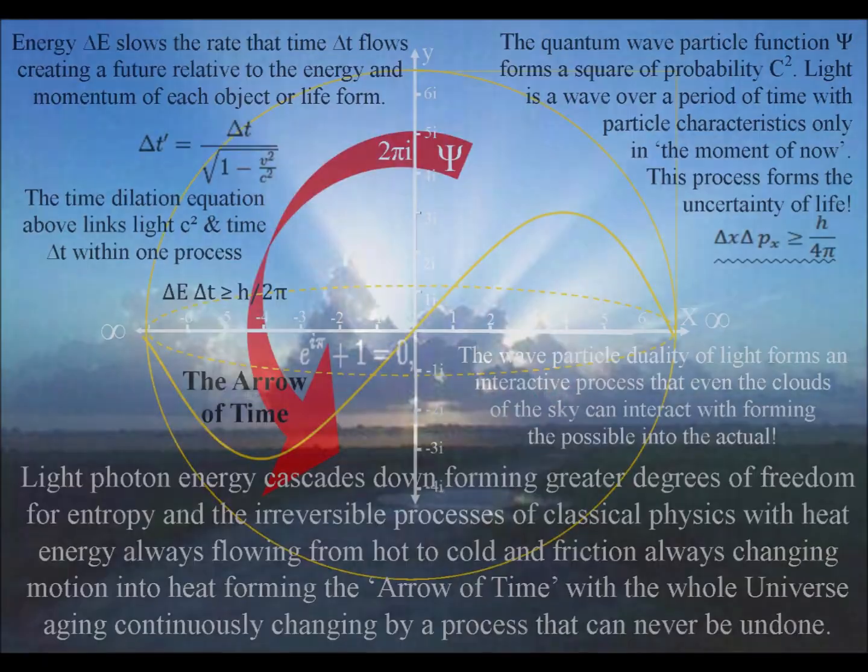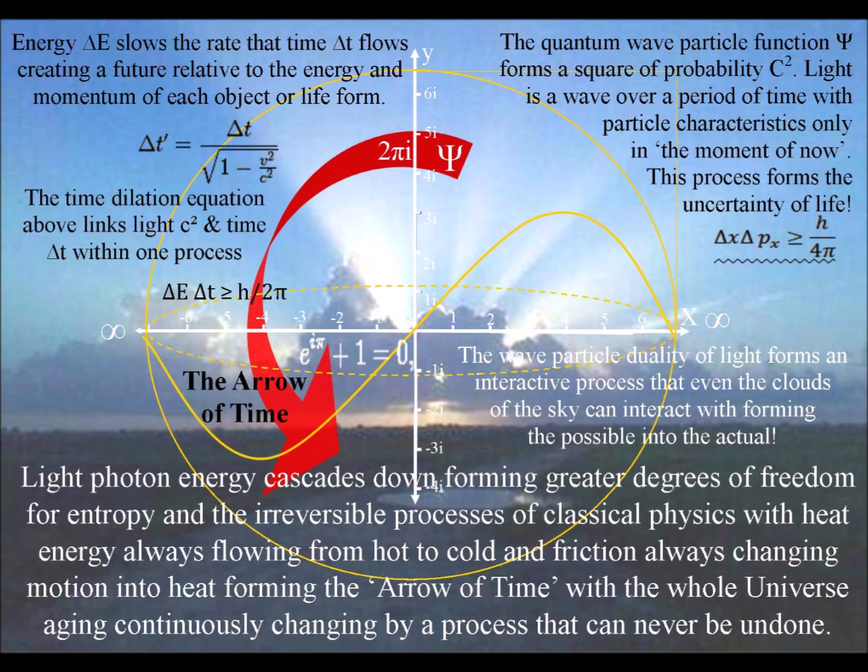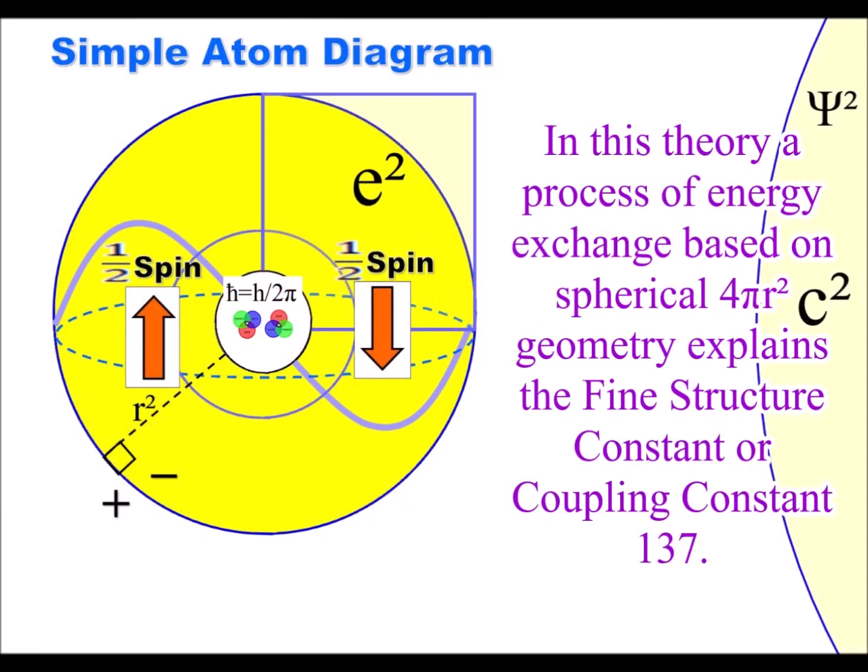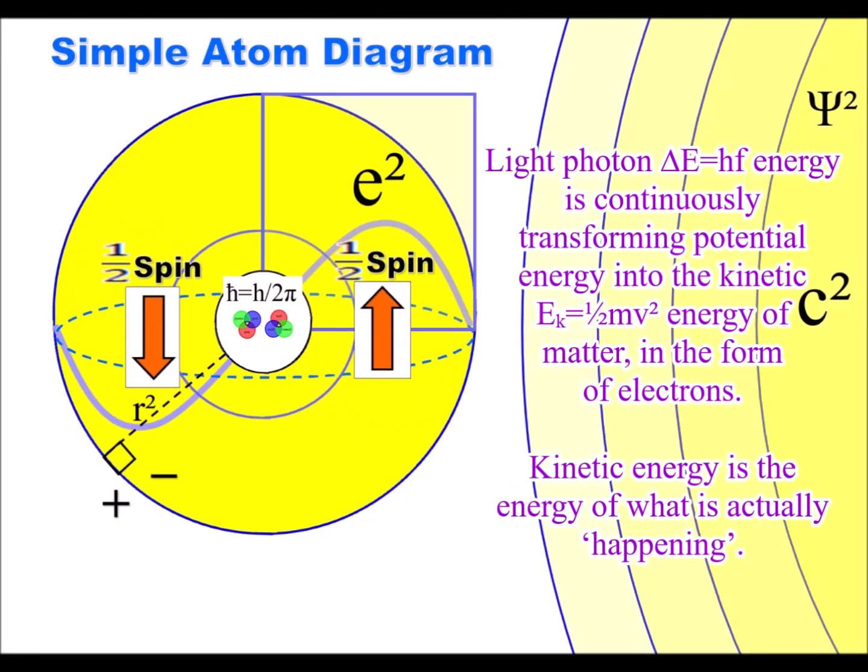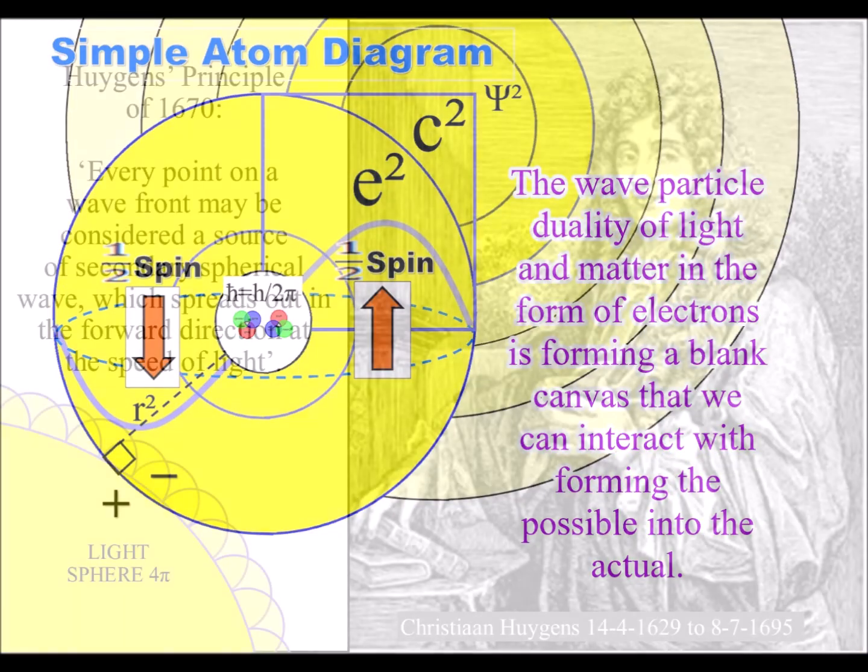The particle characteristics of light will always take the shortest path in the form of straight lines forming light rays. We have the spontaneous absorption and emission of light forming a repetition of spherical symmetry forming and breaking.